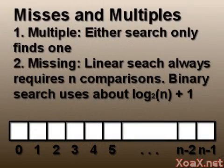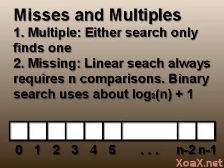There are two additional circumstances to consider: missing and multiple elements. If there are multiple copies of the target in the array, both searches will only find one instance. If the target is not in the array, the linear search will require n comparisons, and the binary search will require approximately log base 2 of (n + 1) comparisons.